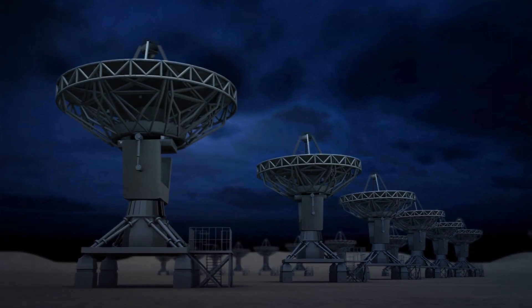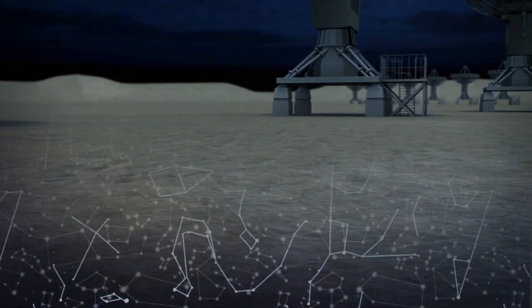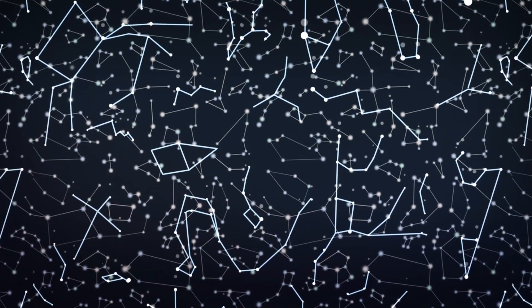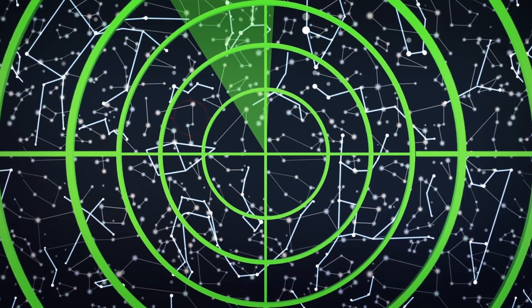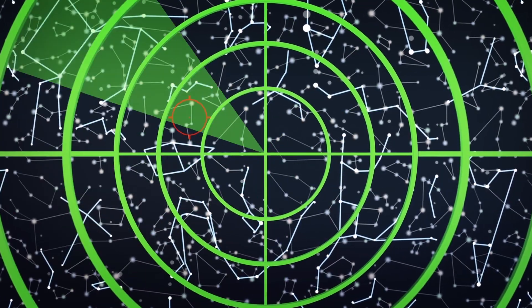The SETI Institute says that the National Radio Astronomy Observatory will turn the Very Large Array's 27 telescopes to scan for signs of alien life in 75% of the night sky, in a February 14 news release announcing the collaboration.